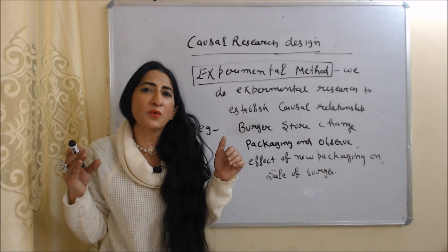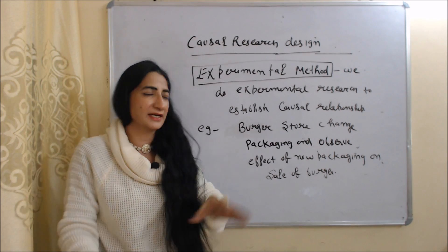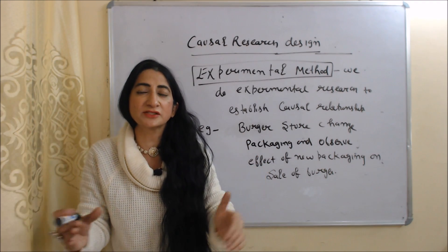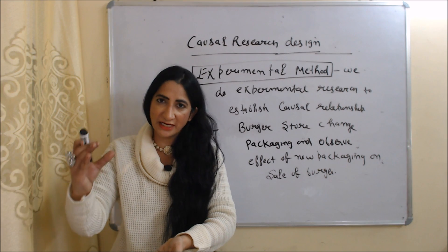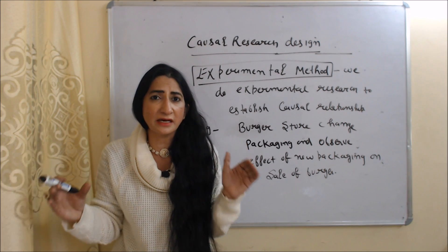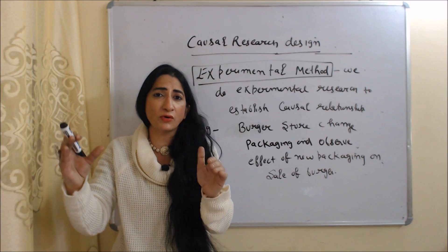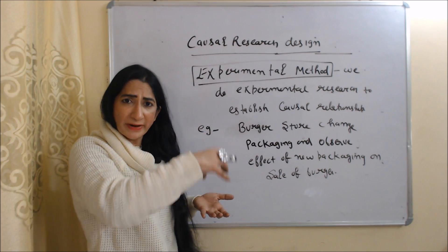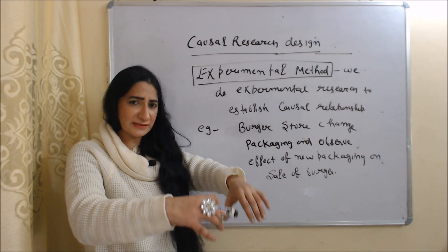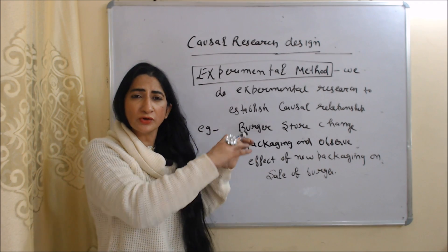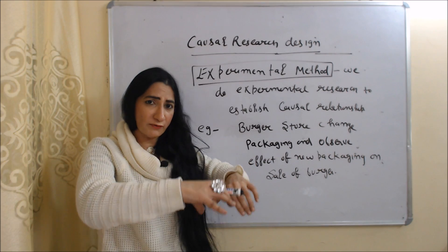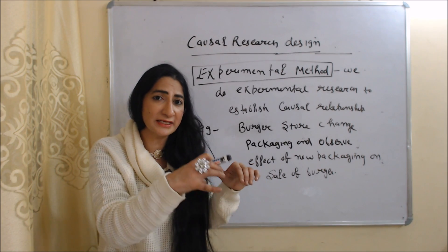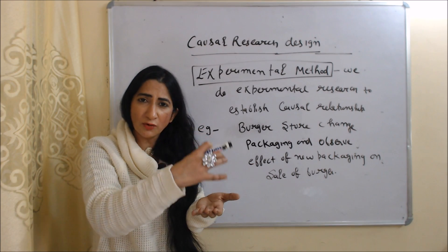Now we will see one method of causal research design. This method is called the experimental method. We do experimental research to establish a causal relationship. For example, a burger store changes the packaging of a burger and observes the effect of the new packaging on burger sales, establishing a causal relationship between new packaging and sales.